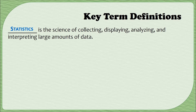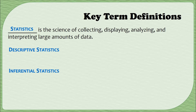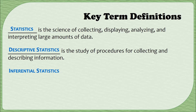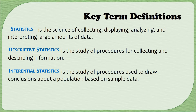Now we'll be using two branches of statistics to do this. We'll be examining descriptive statistics and inferential statistics. These two types of statistics do what they sound like they do. Descriptive statistics is the study of procedures for collecting and describing information — descriptive statistics describe. This is going to be the first portion of the class where we talk about how to gather information and how to present it. Inferential statistics is when you make an inference, when you try to draw a conclusion. Inferential statistics is the study of procedures used to draw conclusions about a population based on sample data, and it's what we'll be looking at in the second half of the course.